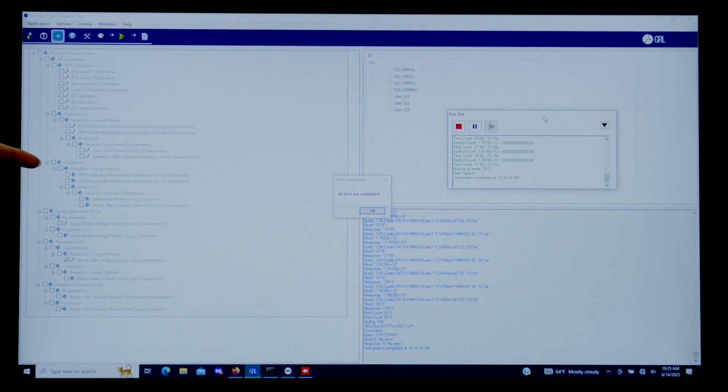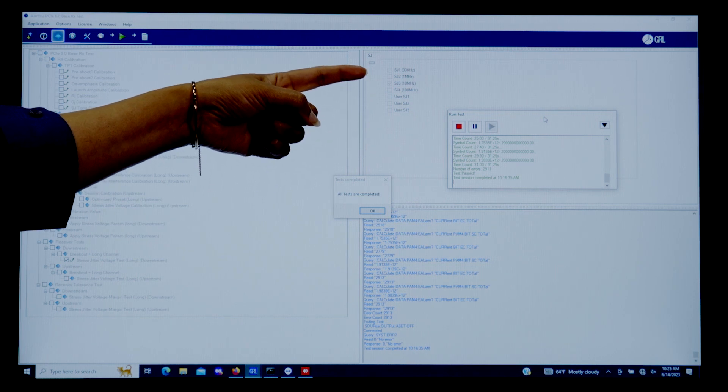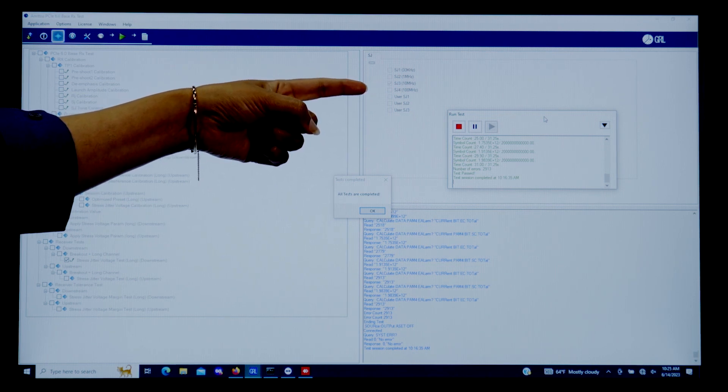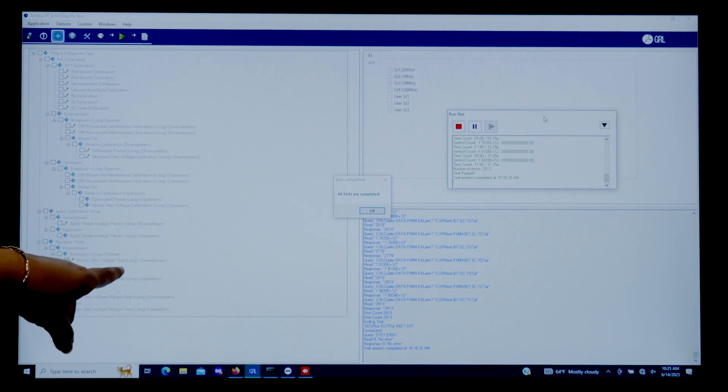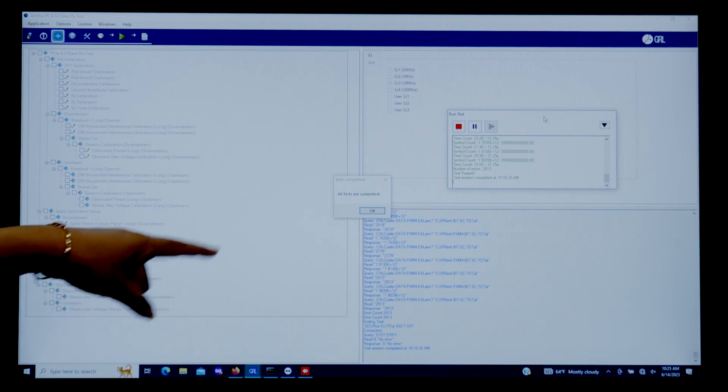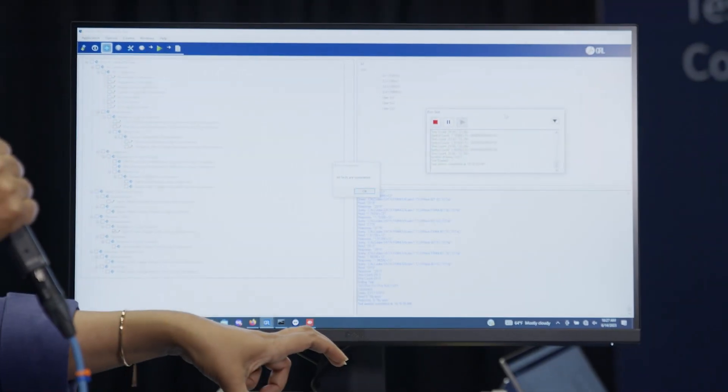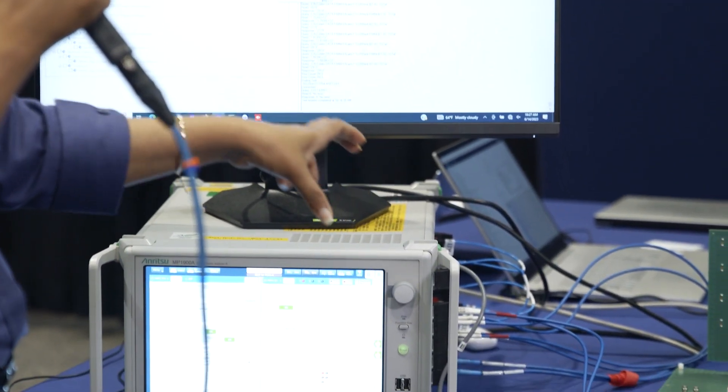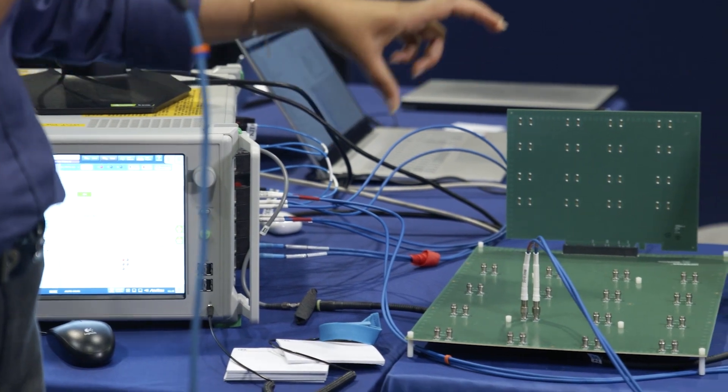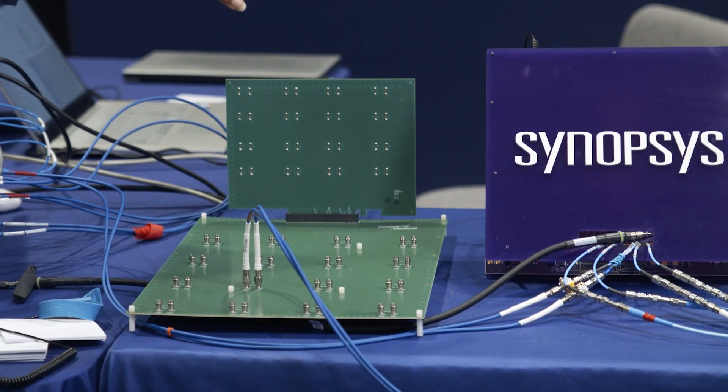Across all the jitter spec from 33 kilohertz, 1 megahertz, 10 megahertz, to 200 megahertz. As you can see, this is the stress jitter voltage test with the long channel and all tests have been completed. The BERT is sending the PRBS pattern through the ISI channel. The total loss in the ISI channel is 32 dB.